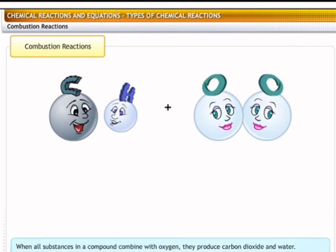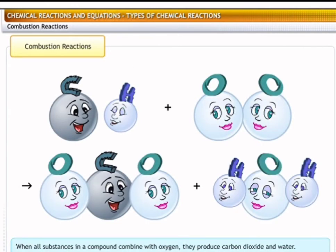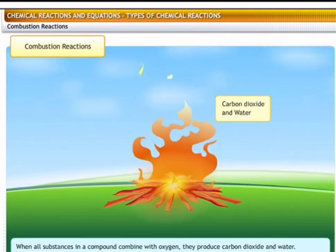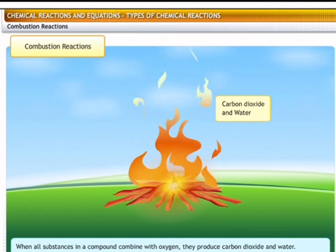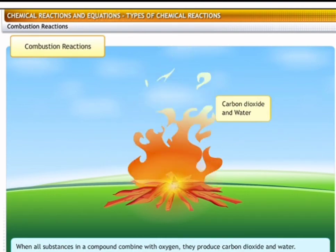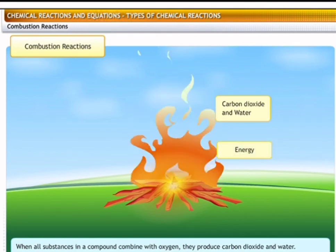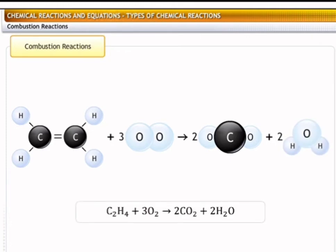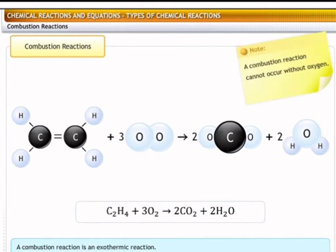In a combustion reaction, when all elements in a carbon compound combine with oxygen, they produce carbon dioxide and water. Thus, a combustion reaction is the burning of a substance in the presence of oxygen, resulting in the release of energy, carbon dioxide, and water. For example, ethylene burns in the presence of oxygen to produce carbon dioxide, water, and heat. As a combustion reaction results in the release of heat energy, it is an exothermic reaction. Remember, a combustion reaction cannot occur without oxygen.